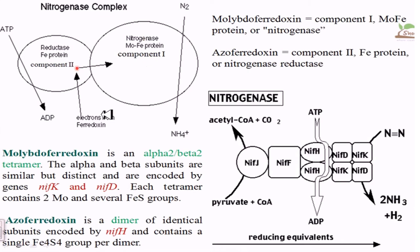The nitrogenase complex has two components: component one and component two. Component one is molybdoferredoxin, whereas component two is azoferredoxin. Molybdoferredoxin is an alpha-beta subunit tetramer — the alpha and beta subunits are similar but distinct and are encoded by the nifK and nifD genes. Each tetramer contains two molybdenum atoms and several iron-sulfur groups. Azoferredoxin is a dimer of identical subunits encoded by nifH and contains a single Fe4S4 iron-sulfur group per dimer.